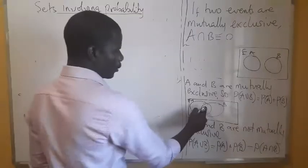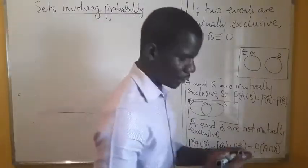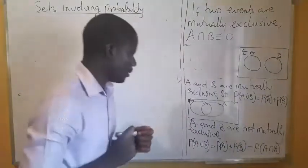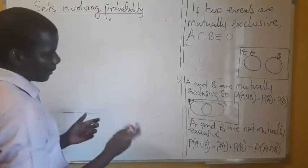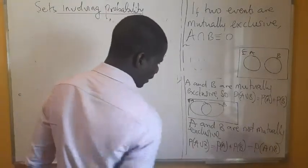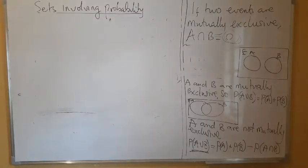Then of course we have the universal set here. For those sets that do have an intersection, they are not mutually exclusive events. So what you are going to do in this case, if you find their union, you need to get rid of the intersection because we are saying their intersection is zero for mutually exclusive events. They do not have an intersection set. This is why I want you to look at this question.